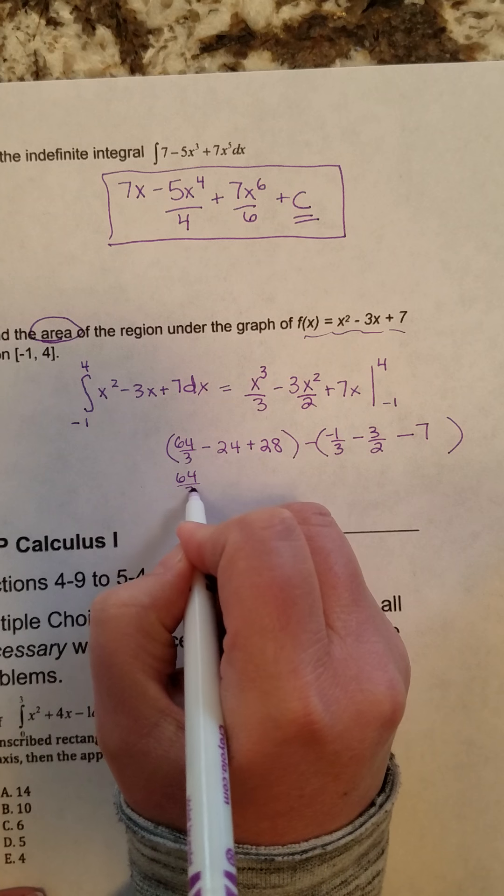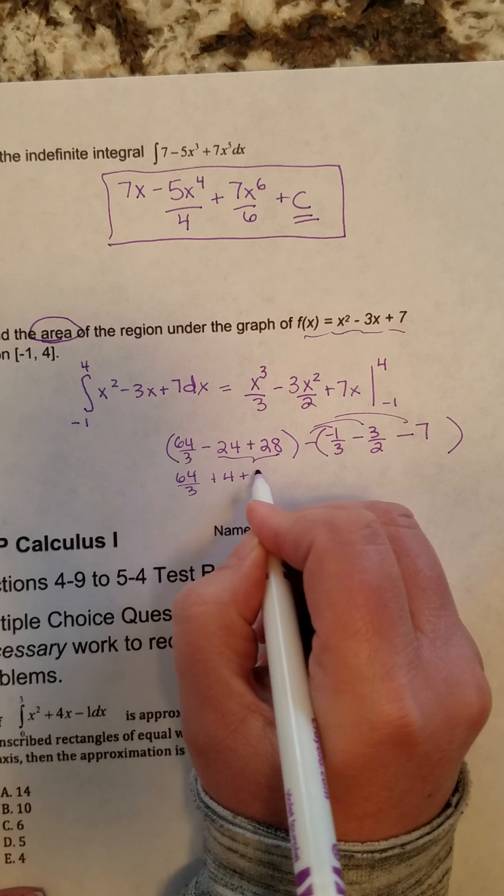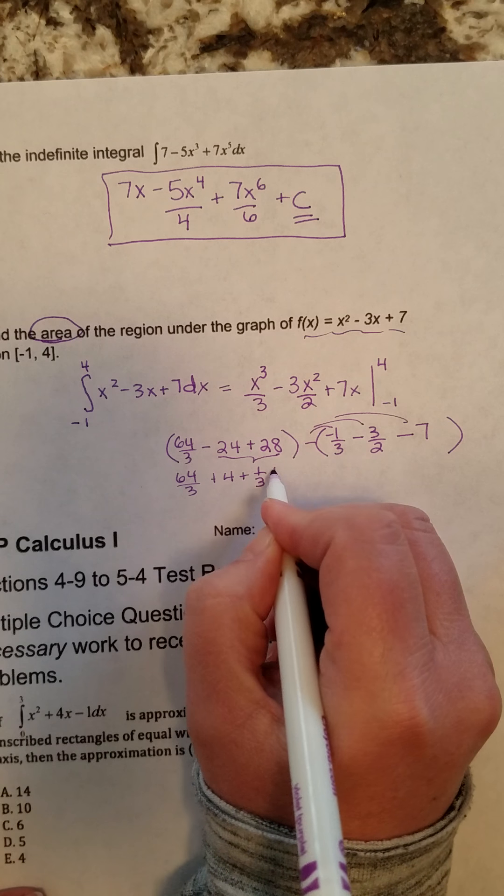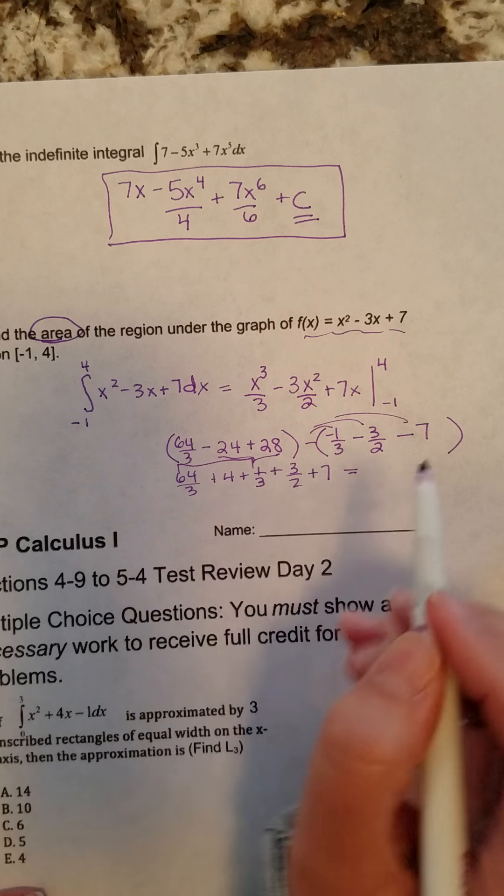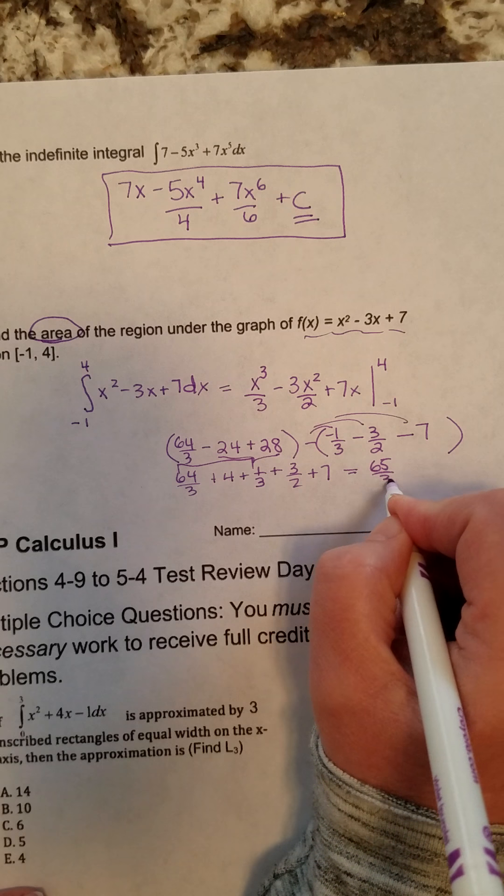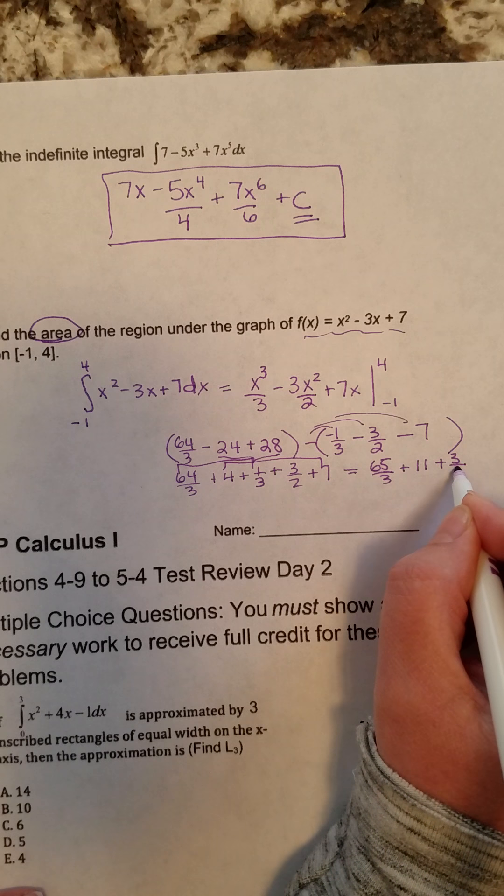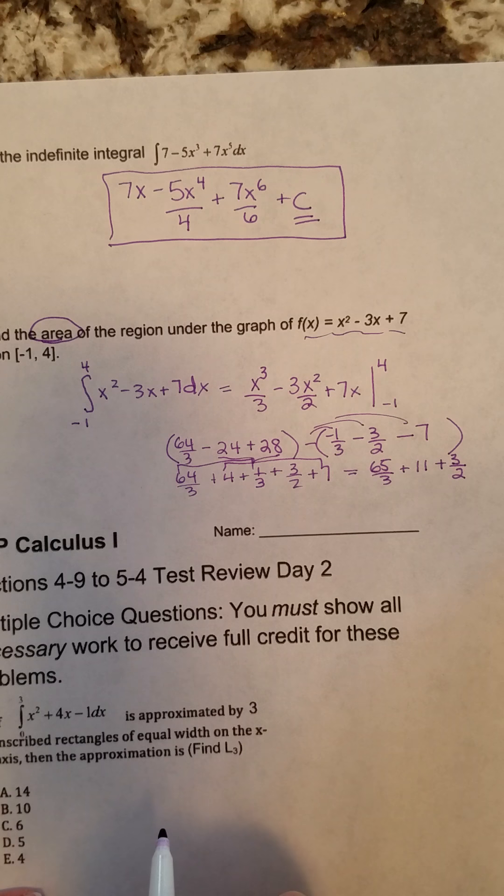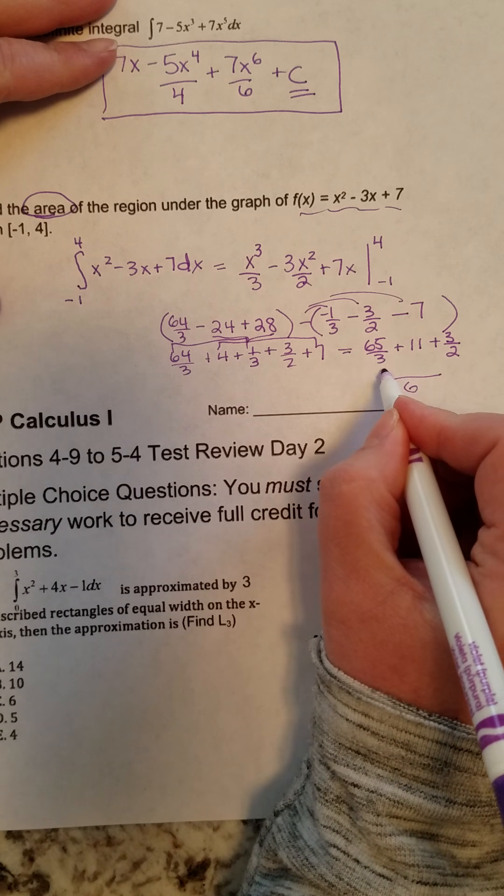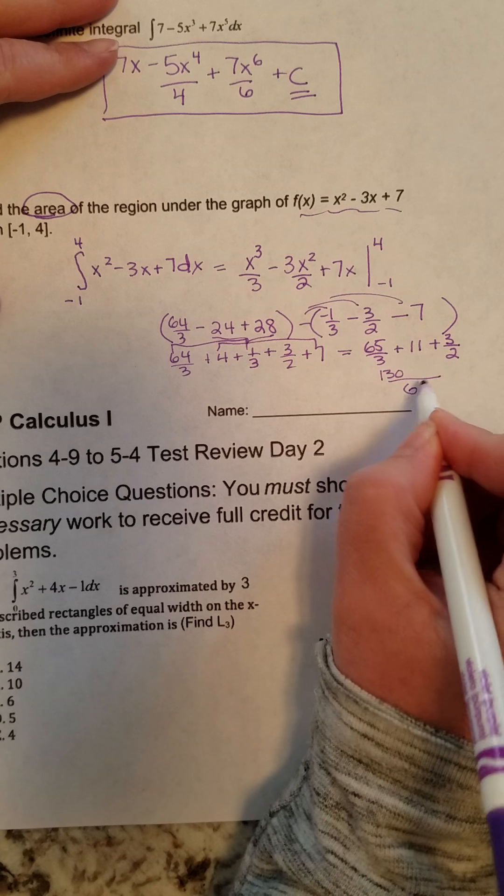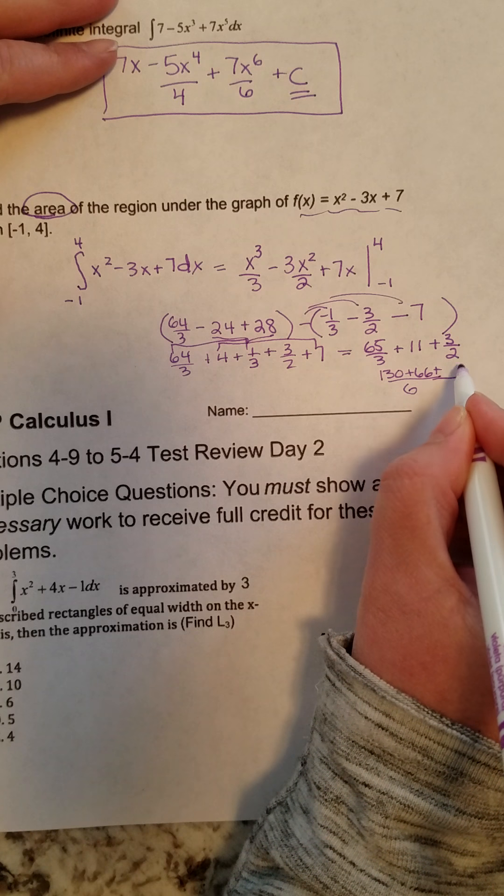So this gives me 64 thirds. I'm going to add these together, plus 4, and now distribute the negative, plus 1 third, plus 3 halves, plus 7. So 64 thirds plus 1 third is 65 thirds. 4 plus 7 is 11, and then plus 3 halves. And at this point here, I would probably get a common denominator. Common denominator here is 6. Multiply the first one by 2, I get 130. Multiply the middle one by 6, I get 66. And multiply this over here by 3, I get 9.